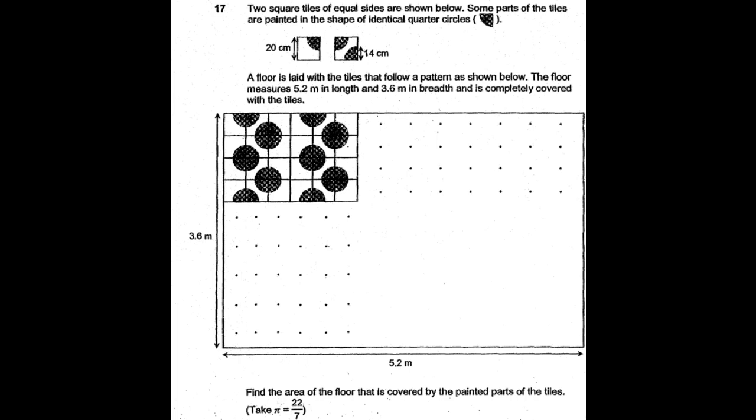First thing we need to do is convert units. The length and breadth of the floor is given in meters while the sides of the tiles is given in centimeters. So 3.6 meters, the breadth, is equal to 360 centimeters, and 5.2 meters, the length, is equal to 520 centimeters.